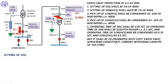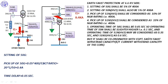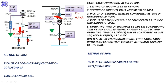Settings of 50G: pickup = 0.05 × 400 / CBCT ratio of 50/1 = 0.4 A, and time delay = 0.05 seconds. Settings of 50N: pickup = 0.05 × 400 / CT ratio of 20/1 × (1/300) = 0.067, and time delay = 0.1 seconds. Note that instantaneous relays have two settings: pickup and time delay.